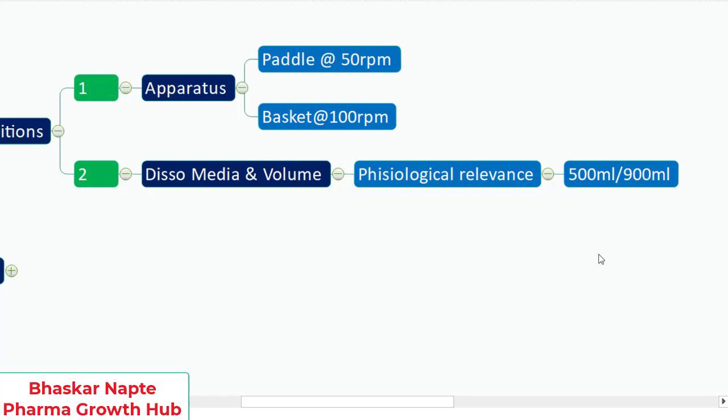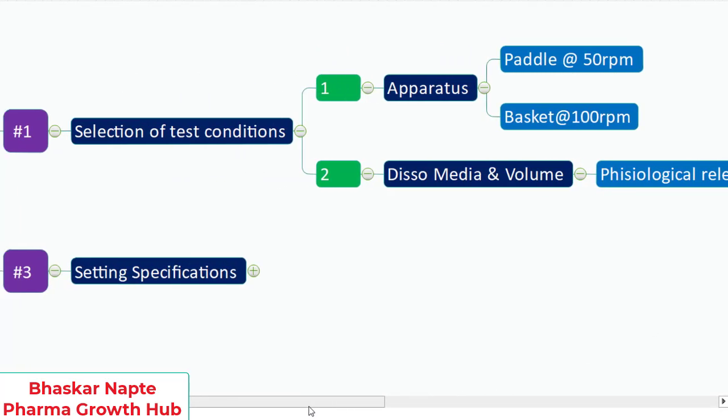When it comes to selection of volume, we cannot really have a dissolution volume that mimics the real-life scenario, which can be thought of as around 250 ml. If you consider that a patient takes 200 to 250 ml of water and add the fluid already present in the stomach, that brings it to around 500 ml — and for that reason, 500 ml dissolution volume is preferred. You must start method development using 500 ml, but if sink conditions are not achieved you may justify higher volumes like 900 ml or more.